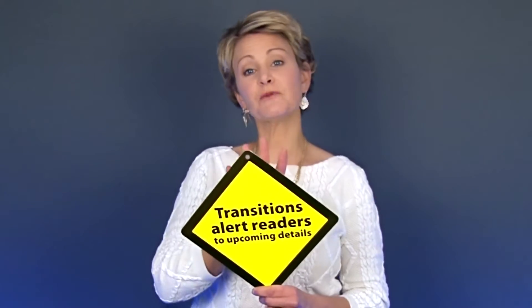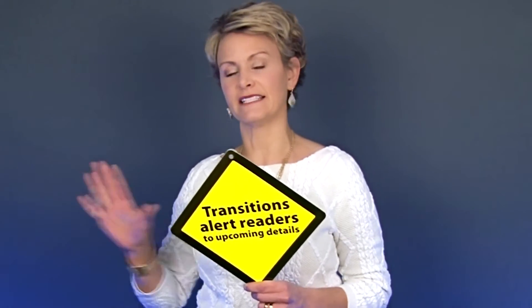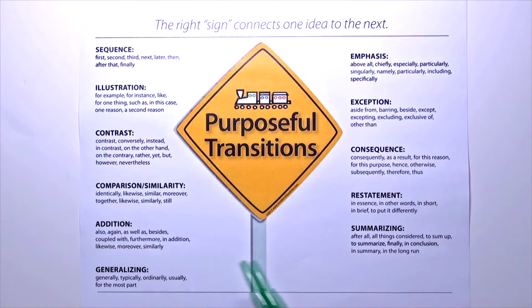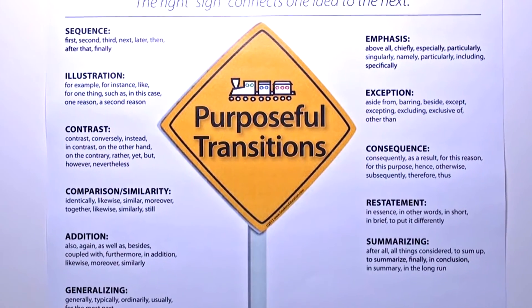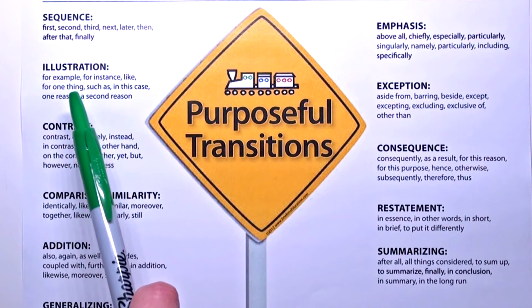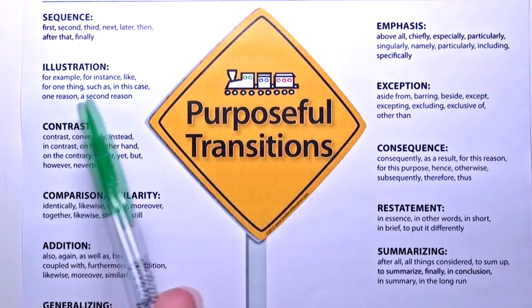Transitions are like road signs. They tell the reader how this sentence is related to the previous sentence. They alert the reader to how the ideas are connected. Once we've shared this, we want to provide students a list of transition words, but we must organize it by relationship.